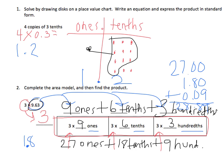So my answer for 3 times 9 and 63 hundredths is 28 and 89 hundredths.